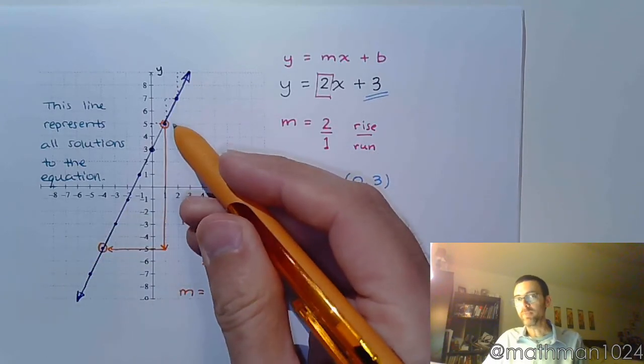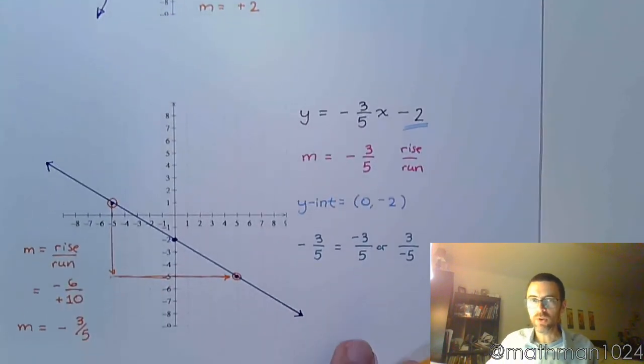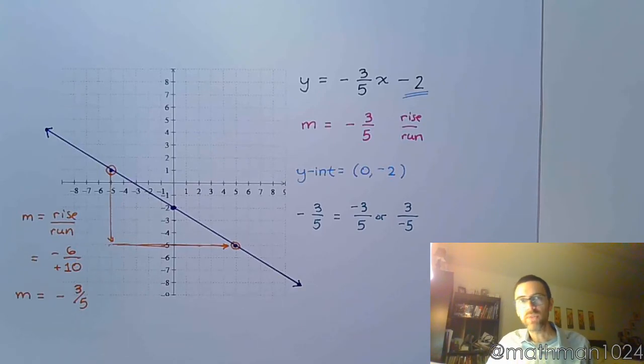So for this line, no matter what two points you pick, when you try to calculate the slope, you're going to get positive 2. Just like down here, no matter what two points you pick, when you simplify and reduce that slope, you're going to get negative 3 over 5.